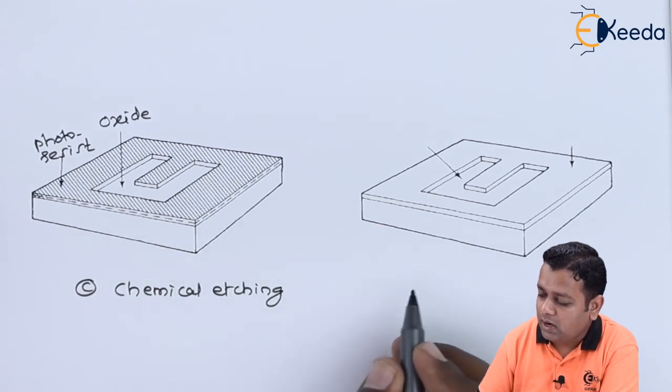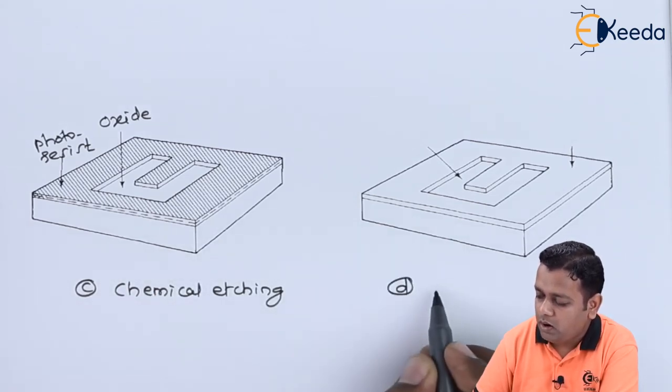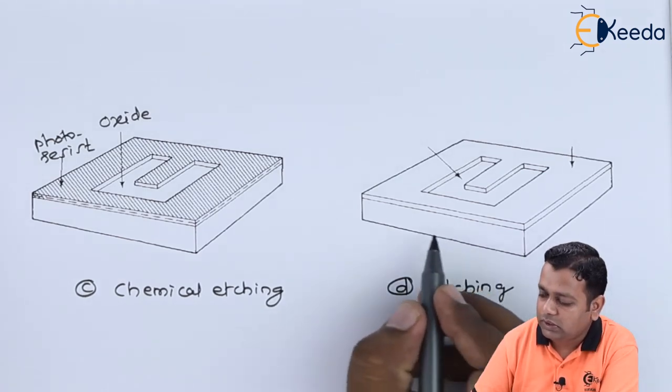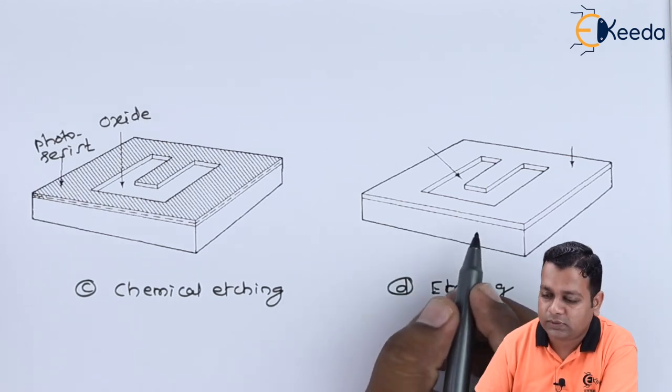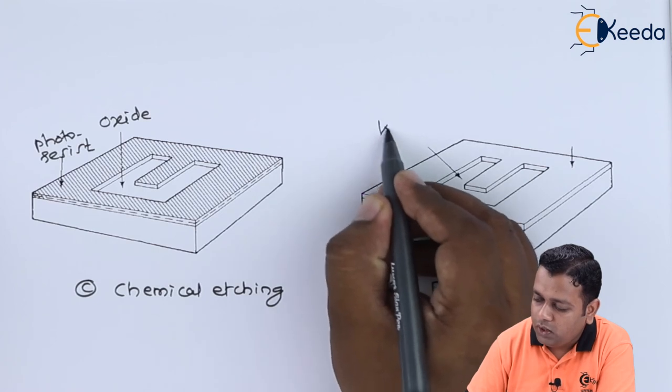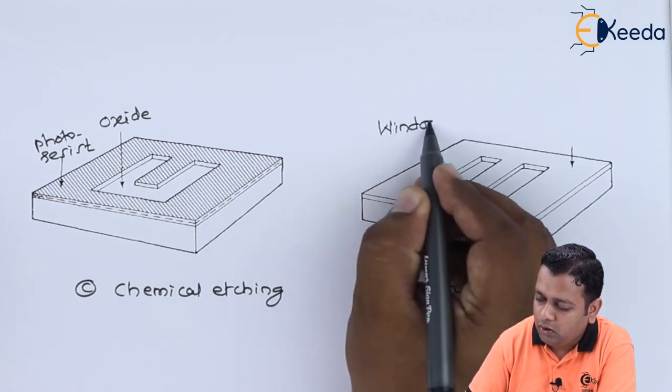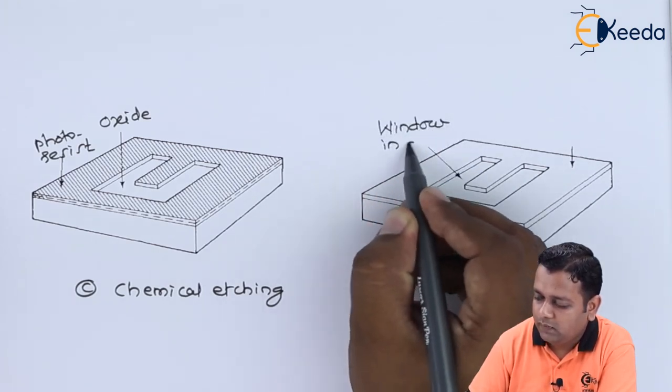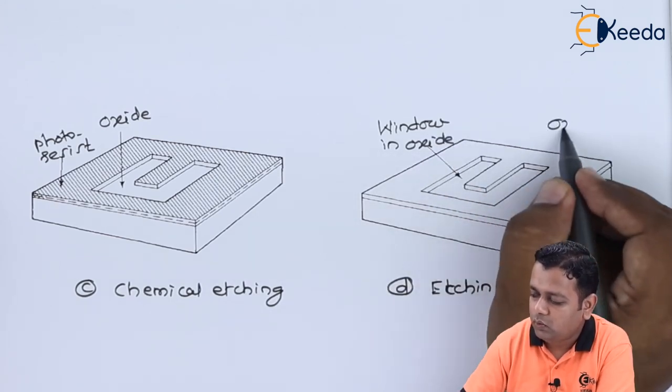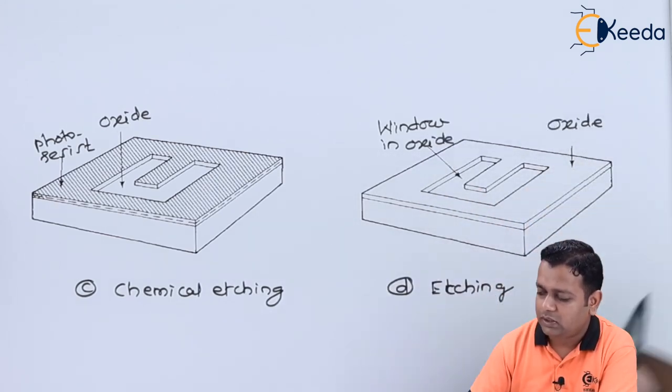Whereas at last we have the part D showing the etching process. So in the etching process again we have the semiconductor substrate. And this is the representation of window that has been formed in the oxide. And here it is the overall oxide represented.